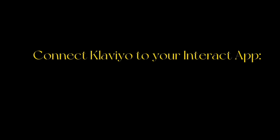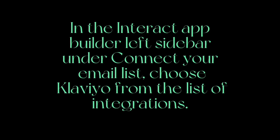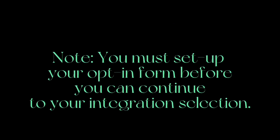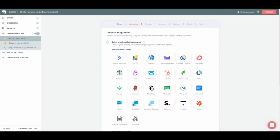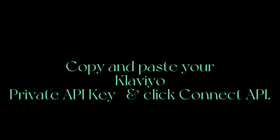Connect Klaviyo to your Interact app. Step 1: In the Interact app builder left sidebar, under Connect Your Email List, choose Klaviyo from the list of integrations. Note: you must set up your opt-in form before you can continue to your integration selection. Step 2: Copy and paste your Klaviyo private API key and click Connect API.